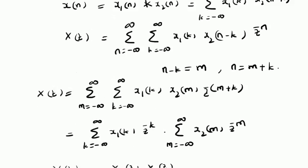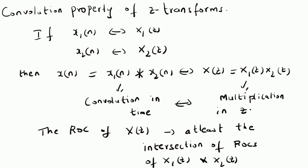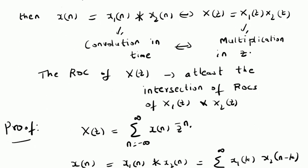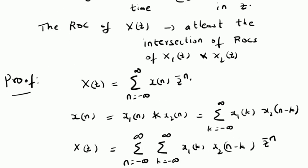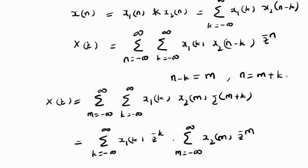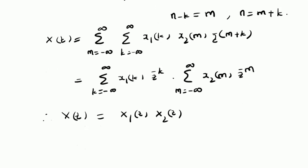To summarize, we have defined the convolution property for Z transforms. If there are two sequences X1 of n and X2 of n with corresponding Z transforms X1 of Z and X2 of Z, then the Z transform of their convolution X of n is X of Z, which is the product X1 of Z times X2 of Z. The proof follows from the Z transform definition by substituting the convolution definition, applying a change of variables, and grouping the k and m terms separately to arrive at the product of the individual Z transforms.